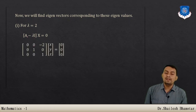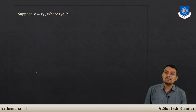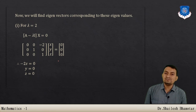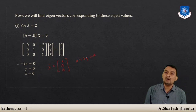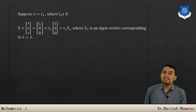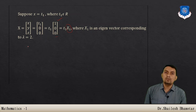Substituting λ = 2 and simplifying gives the system: −2z = 0, y = 0, and z = 0. This means x is free (unknown), y = 0, z = 0. Setting x = t1 where t1 ∈ ℝ, the solution vector is (t1, 0, 0), giving eigenvector x1 = (1, 0, 0) corresponding to λ = 2.